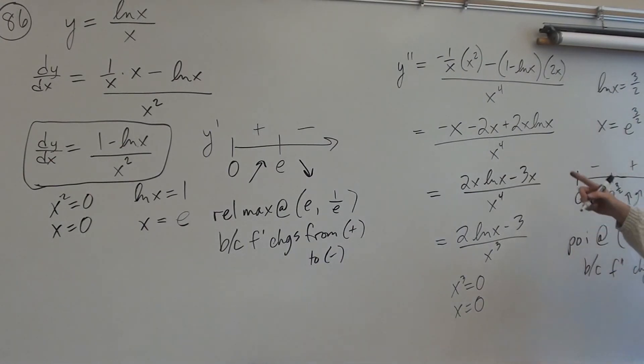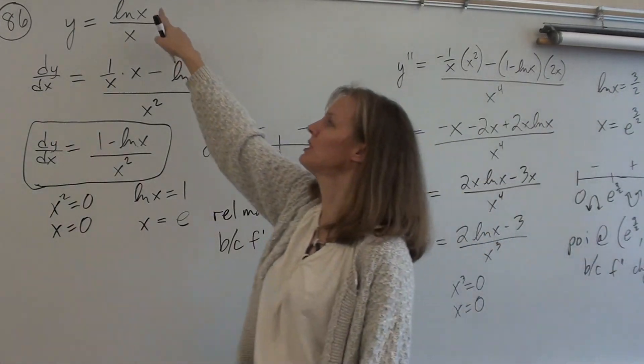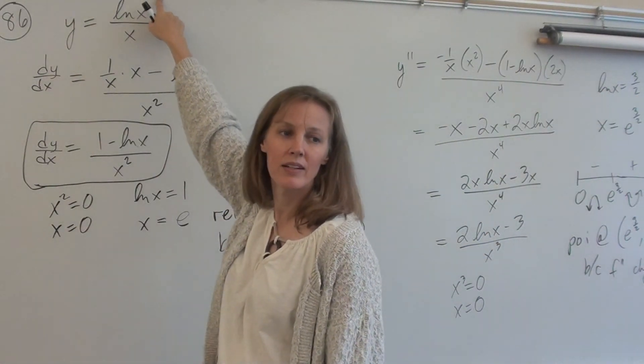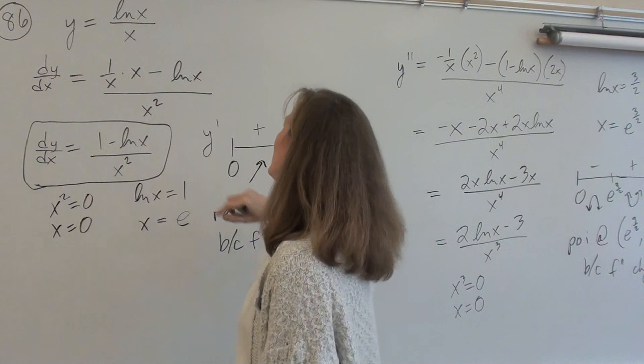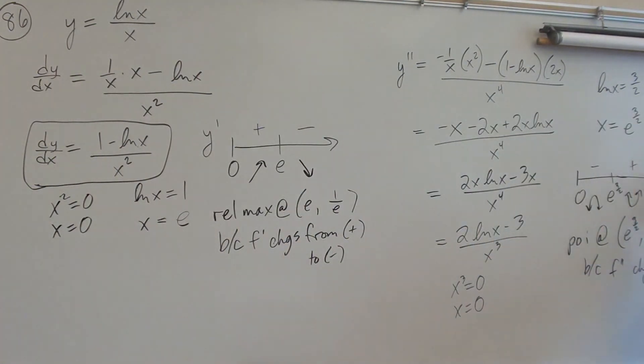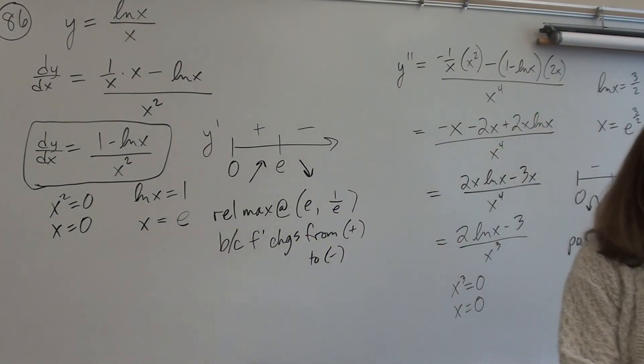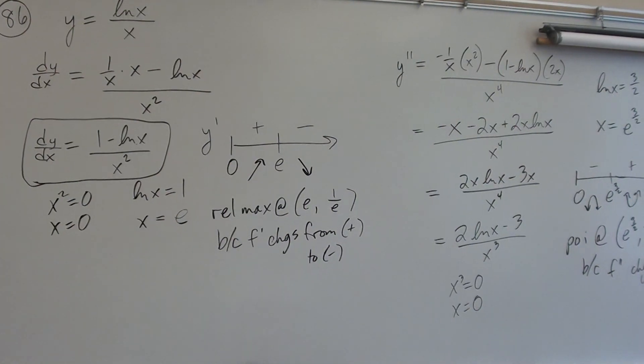Plug my e to the 3 halves back into the original function. What's the natural log of e to the 3 halves? 3 halves. 3 halves over e to the 3 halves. 3 halves over e to the 3 halves is 3 over 2 e to the 3 halves. And you're done. That is what I expect for 87. Probably, probably, probably, probably. Okay. That means probably. I want beautiful, beautiful...